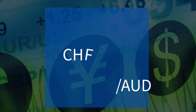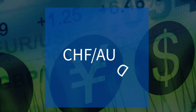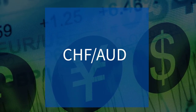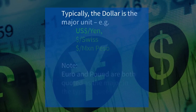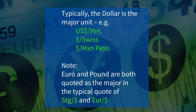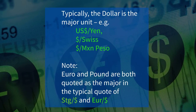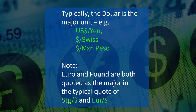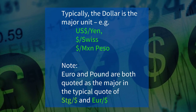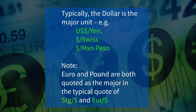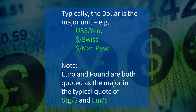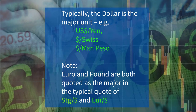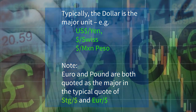When two non-US dollar currencies are involved as a pair, that's referred to as a cross rate. Typically the dollar is the major unit — for example, dollar-yen, dollar-Swiss franc and dollar-Mexican peso. But not always. Note that the euro and pound are both quoted as the major in the typical quote of sterling-dollar and euro-dollar.